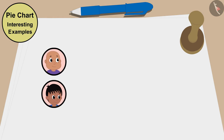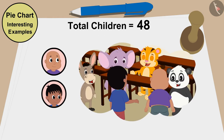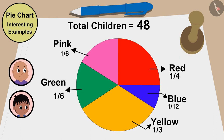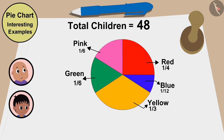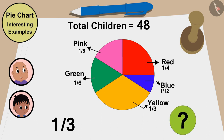Raju and Bablu asked 48 children about their color choice and made a pie chart. Look Raju, after seeing this pie chart, it seems that the largest number of children like yellow. This is one third of this pie chart. But how do we know how many children like this color?